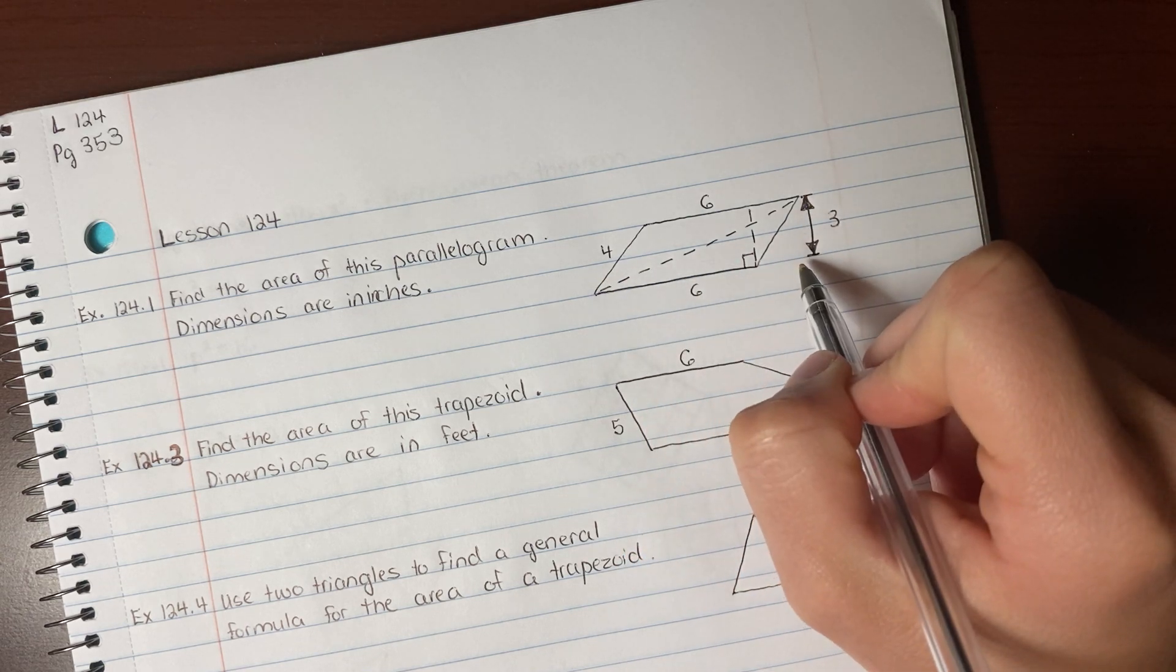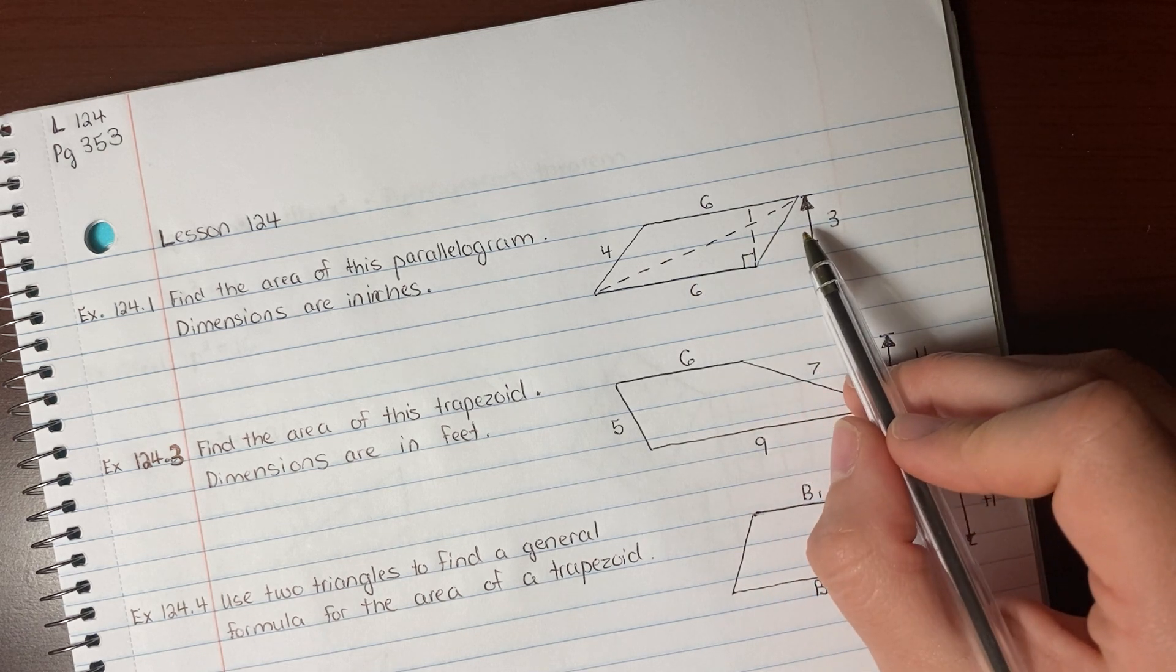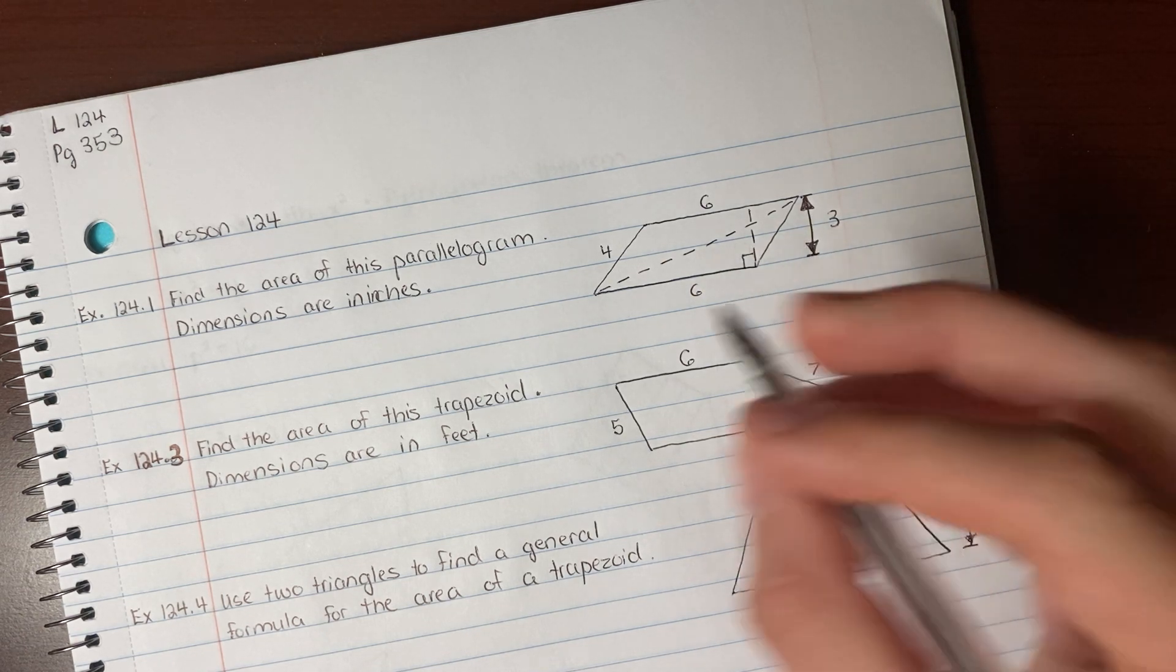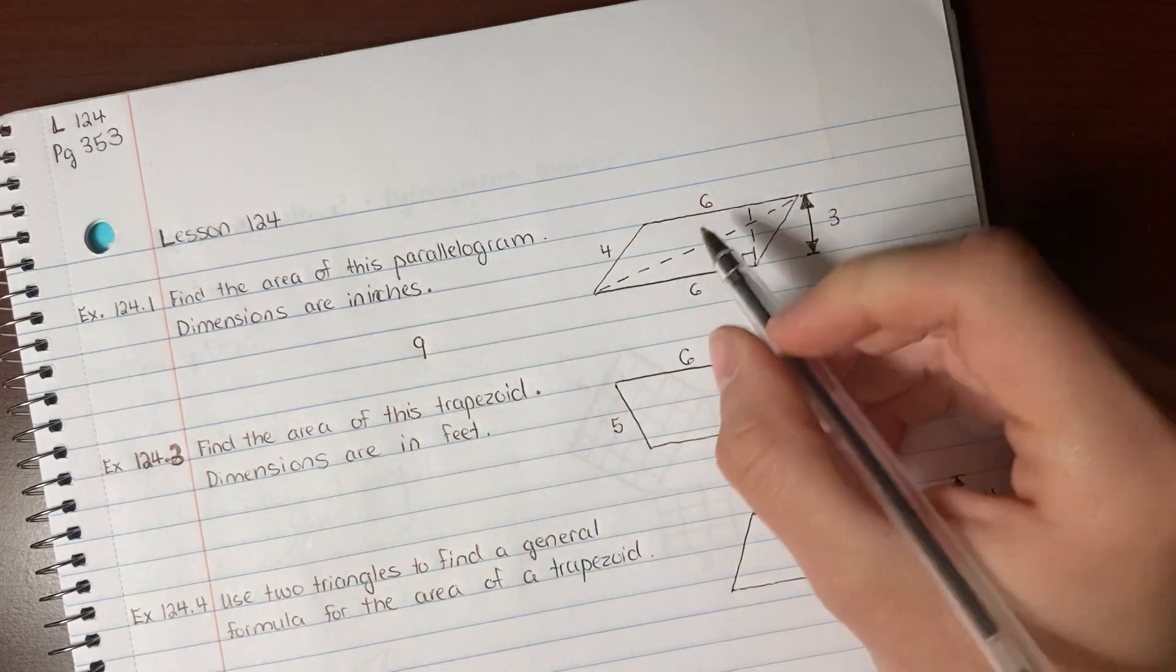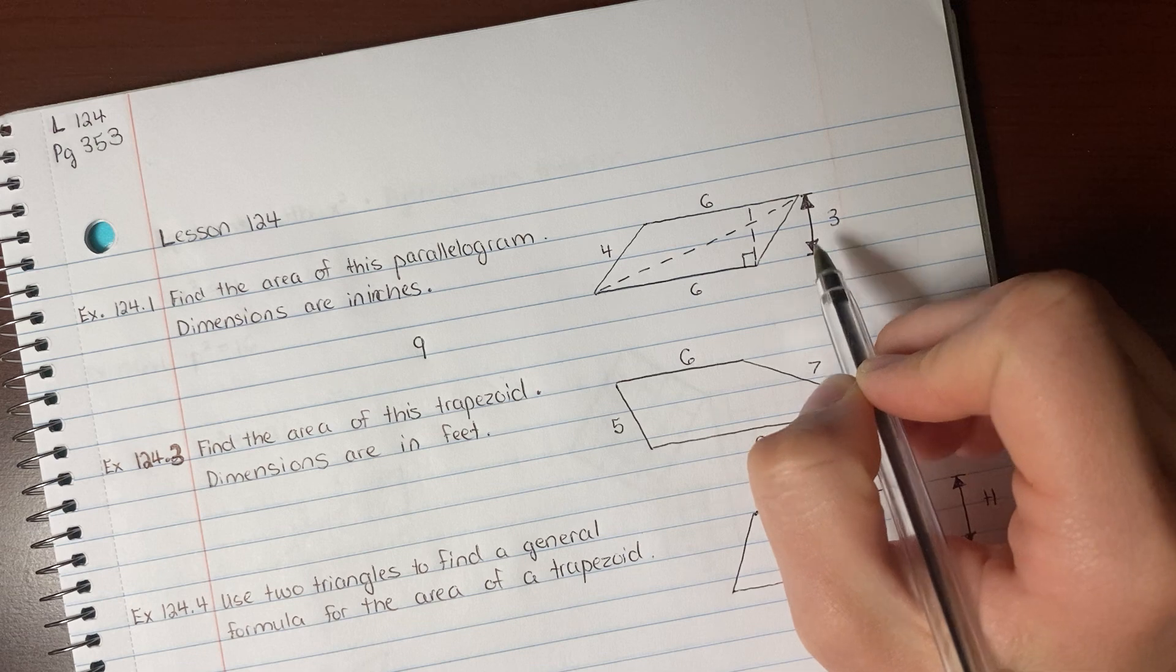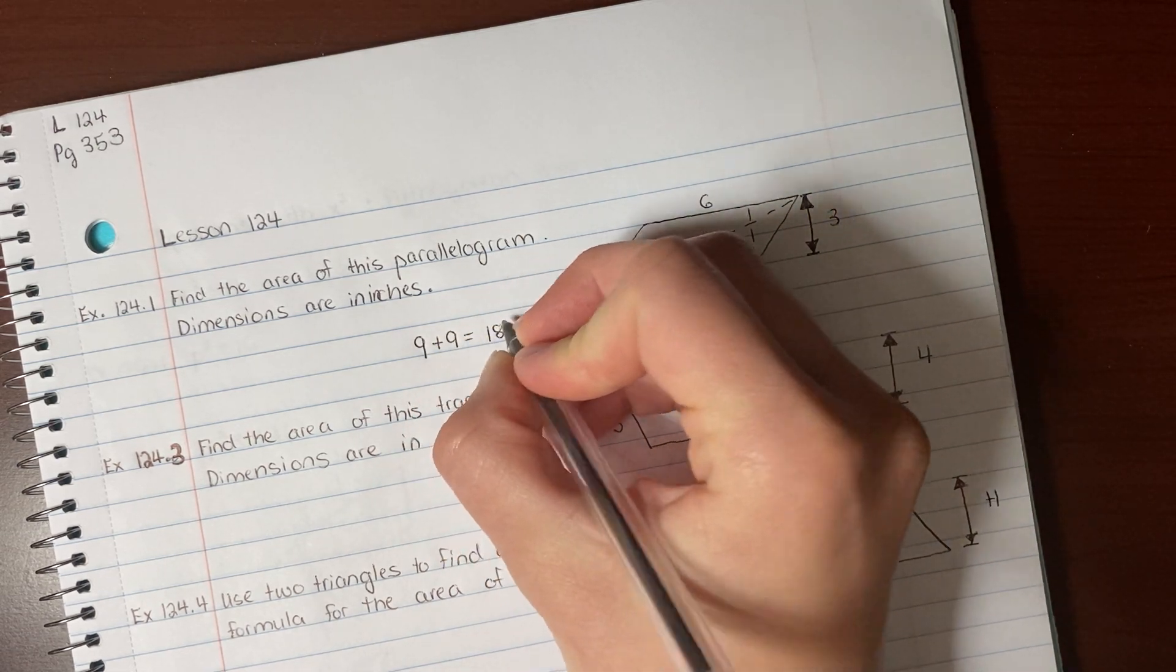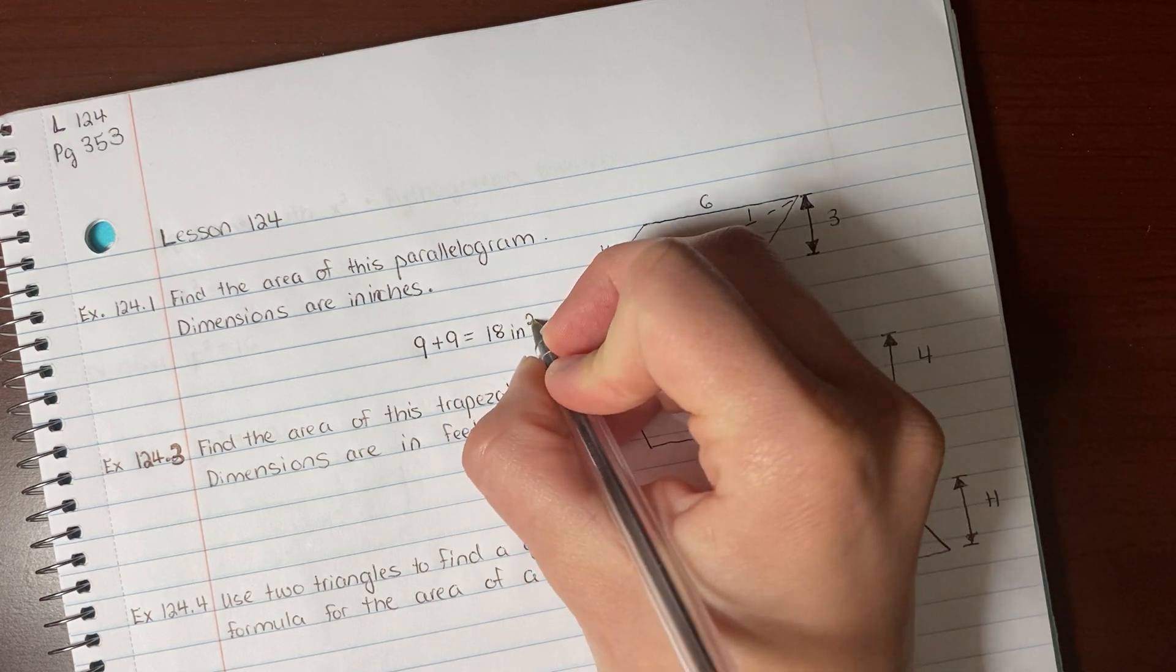So 3 would be our height. You're going to do 6 times 3, which is 18, and then divide that by 2, since this is a triangle, and that will get you 9. And then for the top one, the base is 6, so times the height of 3 divided by 2 is 9. So you add 9 plus 9, and you get 18 inches squared.